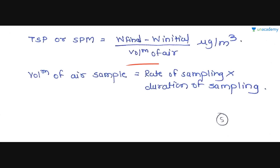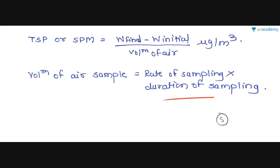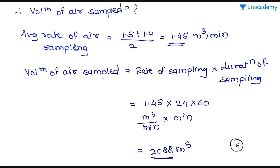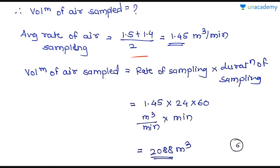TSP equals the filter paper's final weight minus initial weight, divided by volume of air — in micrograms per cubic meter. Volume of air sampled equals rate of sampling multiplied by duration of sampling. Since there is a linear decline in flow rate, we average both values: (1.5 + 1.4) / 2 = 1.45 m³/min. This is our average rate of air sampling.